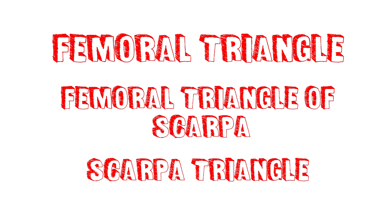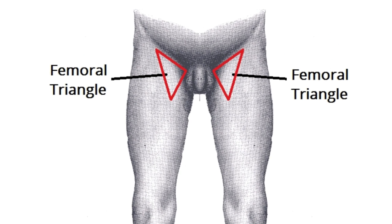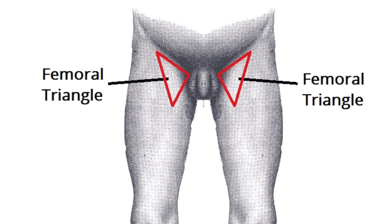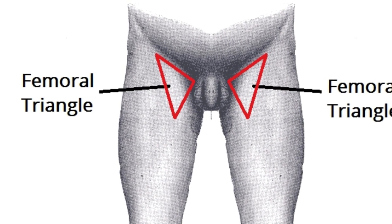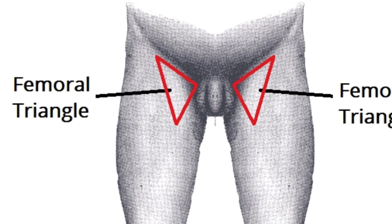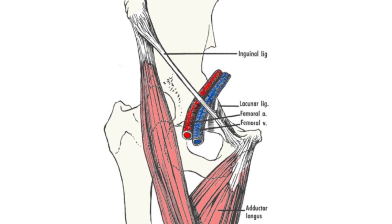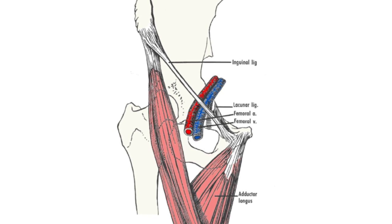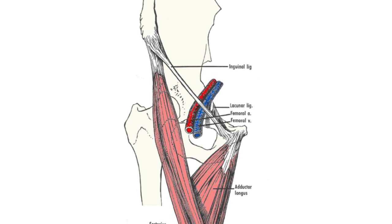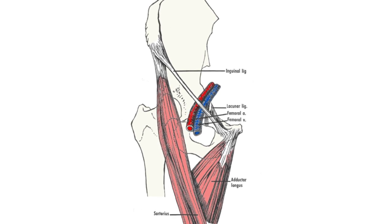The femoral triangle is also known as the femoral triangle of Scarpa or Scarpa's triangle. It is a subfascial space located at the upper inner thigh, and it appears as a triangular depression which lies inferior to the inguinal ligament.